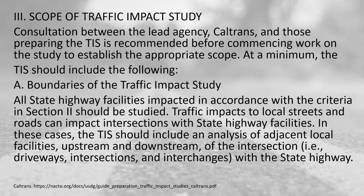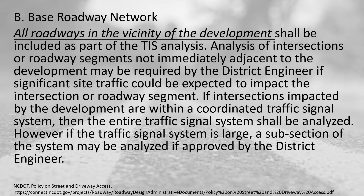Here's another example from a state perspective with more general terminology. It looks at traffic impacts to local streets and roads that can impact intersections with state highway facilities — considering how the proposed development is going to impact the state highway system and looking at adjacent local facilities both upstream and downstream of those intersections, driveways, and interchanges with the state highway.